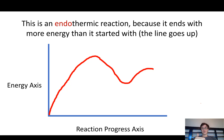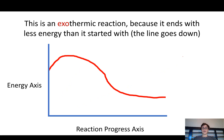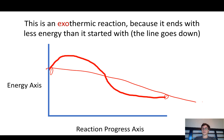This is an endothermic reaction, for example, because it ends up with more energy than it started with — if you connect the beginning and the end, the line goes up, so it gains energy as the process moves. This is an exothermic reaction, because if you connect the very end to the very beginning, you get a downward sloping line — so it loses energy in total as the process goes on.